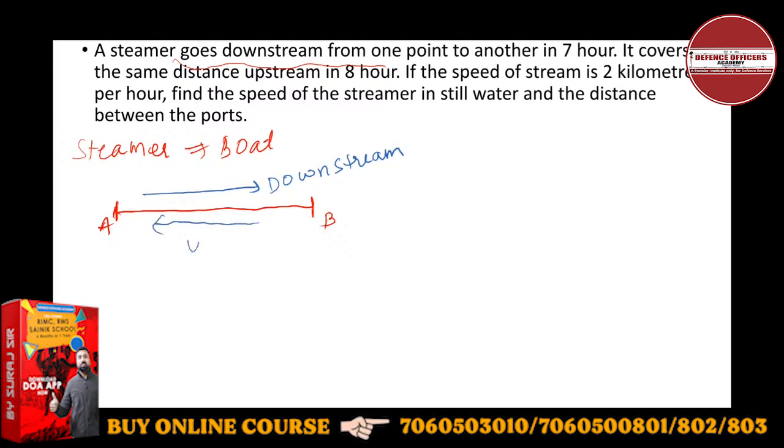And in the opposite direction, it will be upstream. So a steamer goes downstream from one point to another in seven hours. In the downstream case, the time is given. Downstream time TD is seven hours.